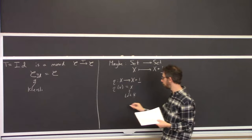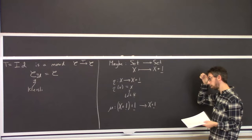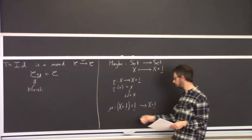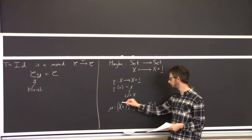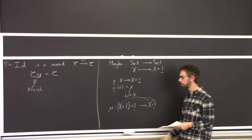The join goes from X+1+1 to X+1. To give a map out of a coproduct you just give a map out of each piece. So I give a function that looks like identity on X, identity on the first 1 (from the inner +1), and identity on the outer 1 — essentially collapsing the two 'nothing' points into one.